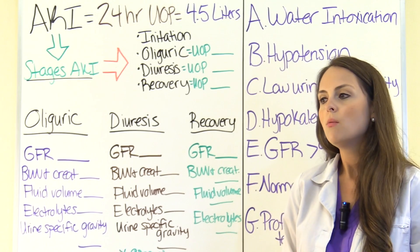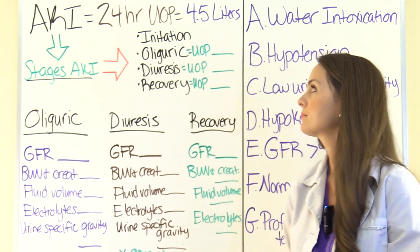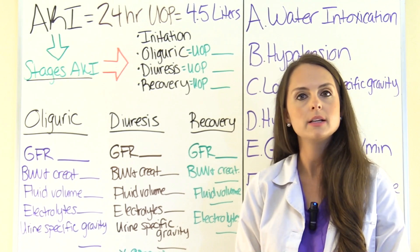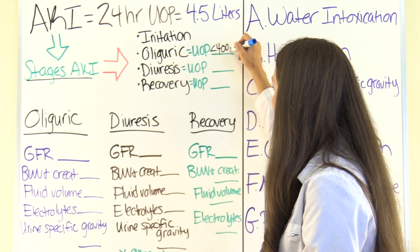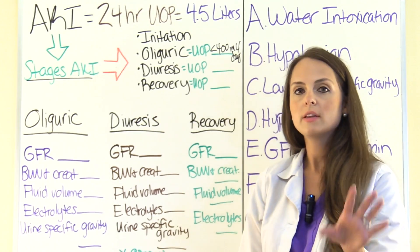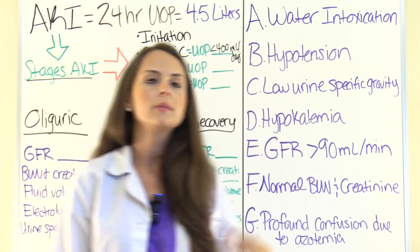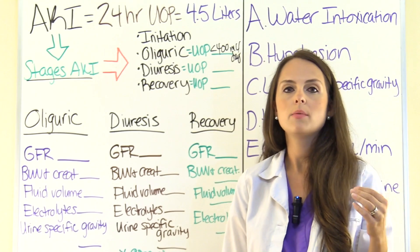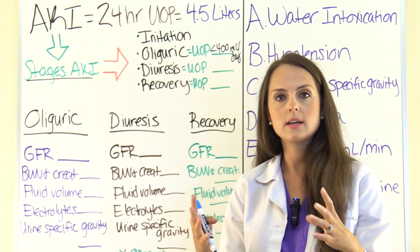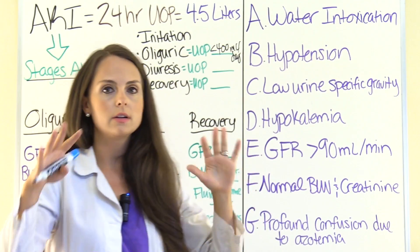The best way to determine the stage is to look at urinary output. In the oliguric stage, urinary output should be less than 400 milliliters per day. Our patient is putting out four and a half liters, so we can rule out this stage — but let's review it. The glomerulus, the part of the nephron that filters the blood, is damaged. So the glomerular filtration rate, GFR, is going to be severely decreased. A normal GFR is greater than 90 milliliters per minute.